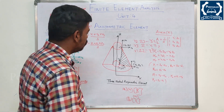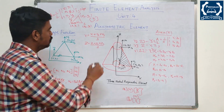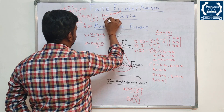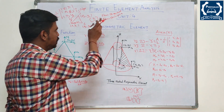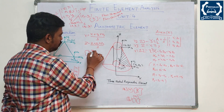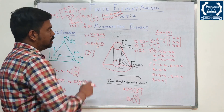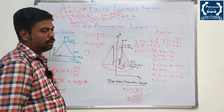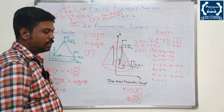Another important point: for the CST element, the D matrix (strain-displacement matrix) has two conditions — plane stress condition and plane strain condition. You have to verify which condition the problem belongs to. But for the Axisymmetric element, there is only one D matrix formula. The remaining procedure is all the same.